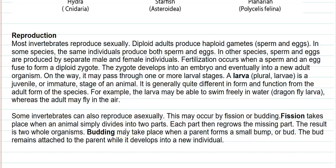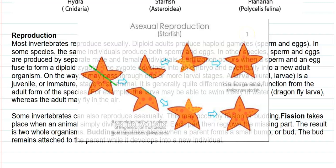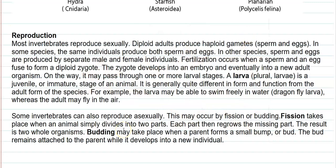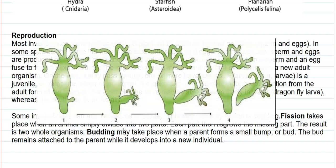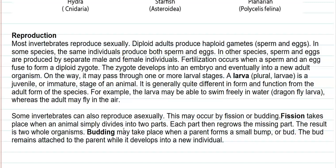Some invertebrates can also reproduce asexually. Two common types are fission and budding. Fission takes place when an animal simply divides into two parts; each part then regrows the missing portion, resulting in the formation of two whole organisms — a typical example is the starfish. Budding takes place when a parent forms a small bump or bud — the typical example is hydra. The bud remains attached to the parent while it develops into a new individual.